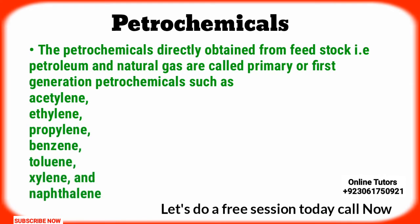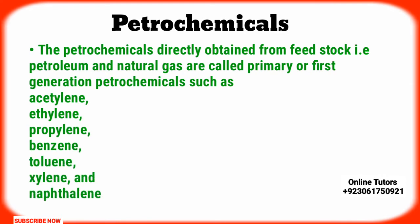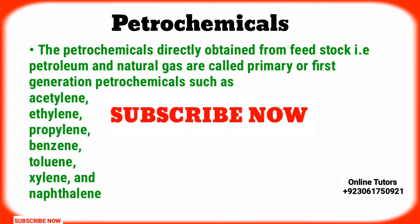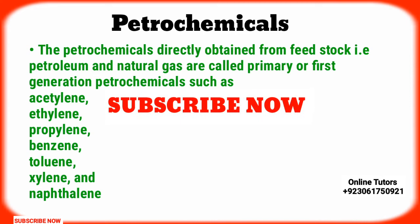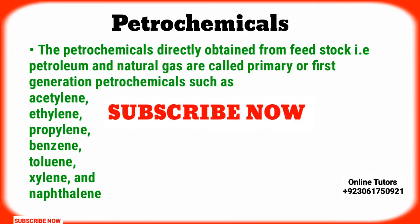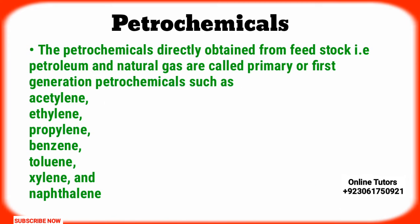The petrochemicals directly obtained from feedstock — petroleum and natural gas — are called primary or first generation petrochemicals, such as acetylene, ethylene, propylene, benzene, toluene, xylene, and naphthalene.